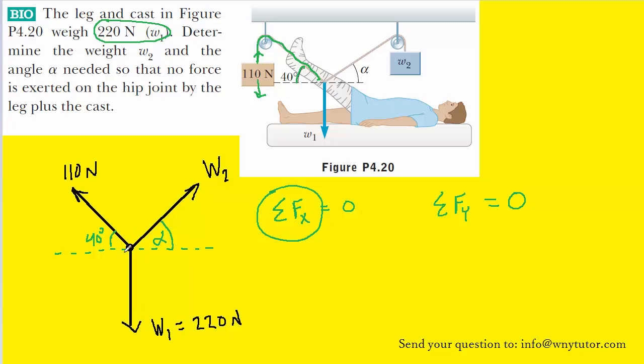We can see with the 110 Newton force that we can draw its x-component by pointing a force to the left of the free-body diagram and then a y-component that points upward.